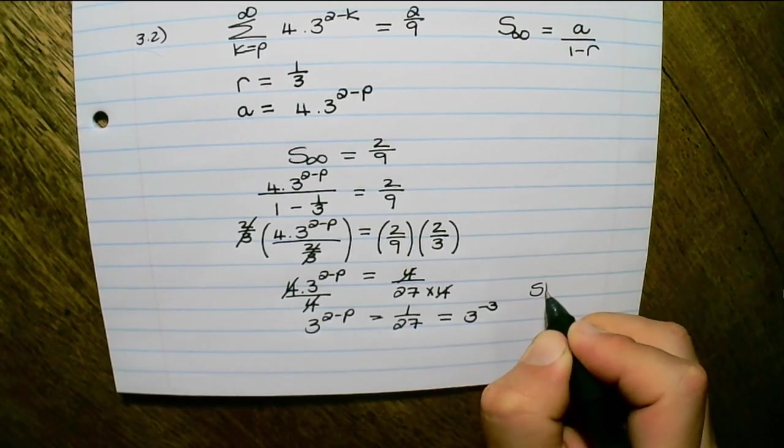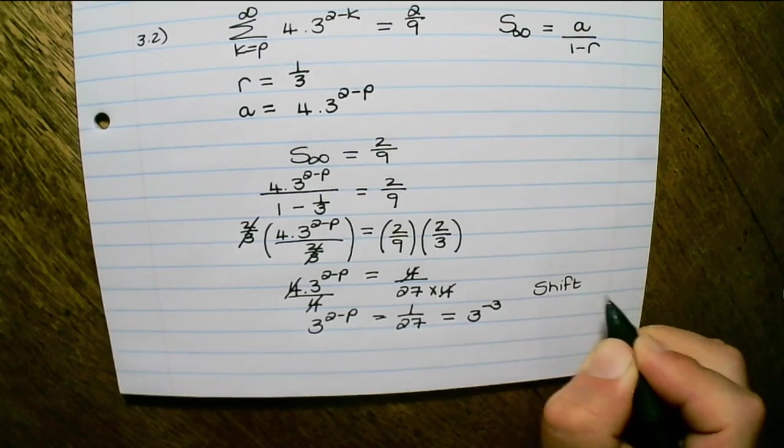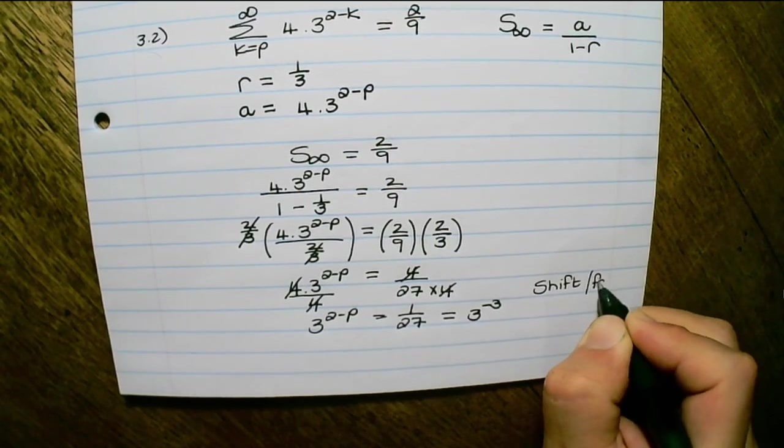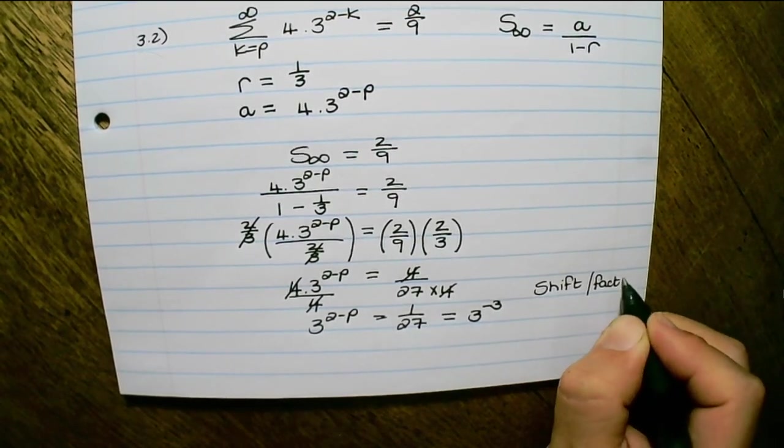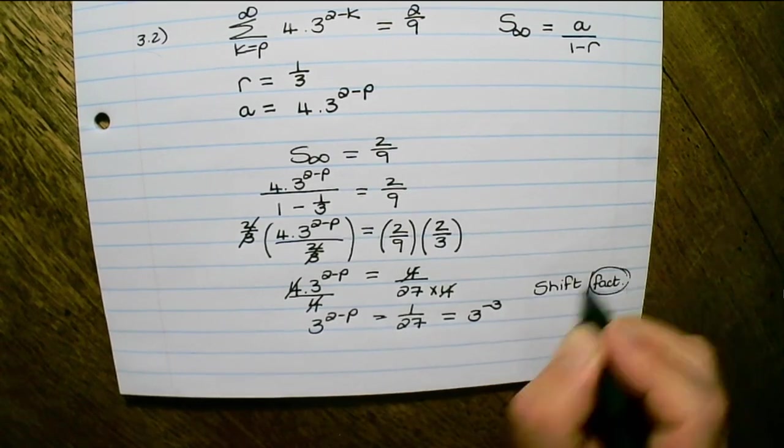And on your calculator, if you have a Casio calculator, you'd use shift fact, which will present 1 over 27 in terms of a factor.